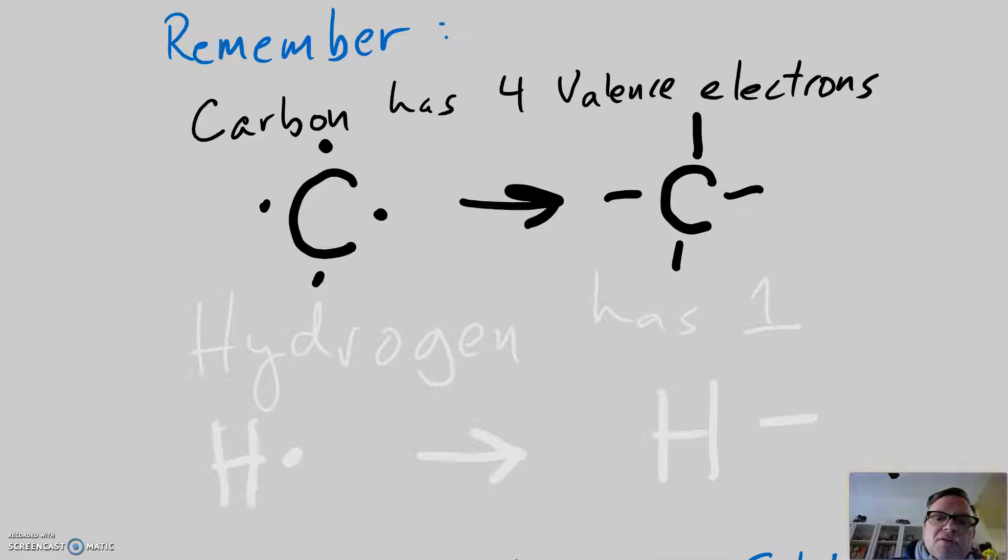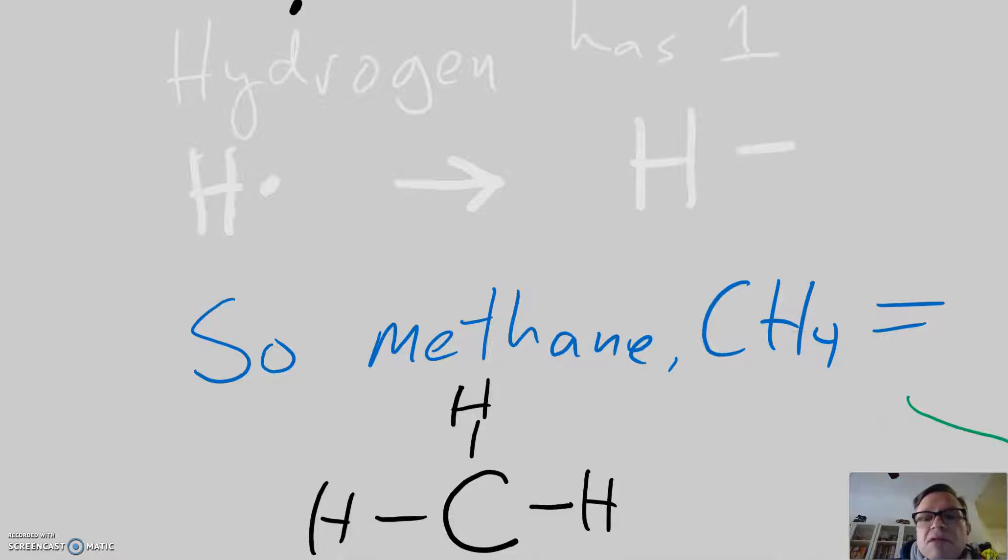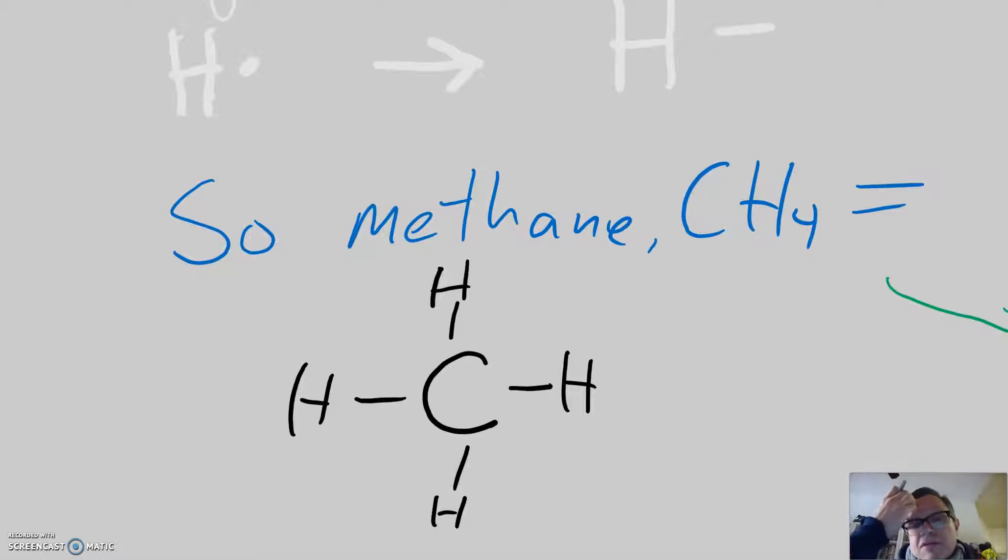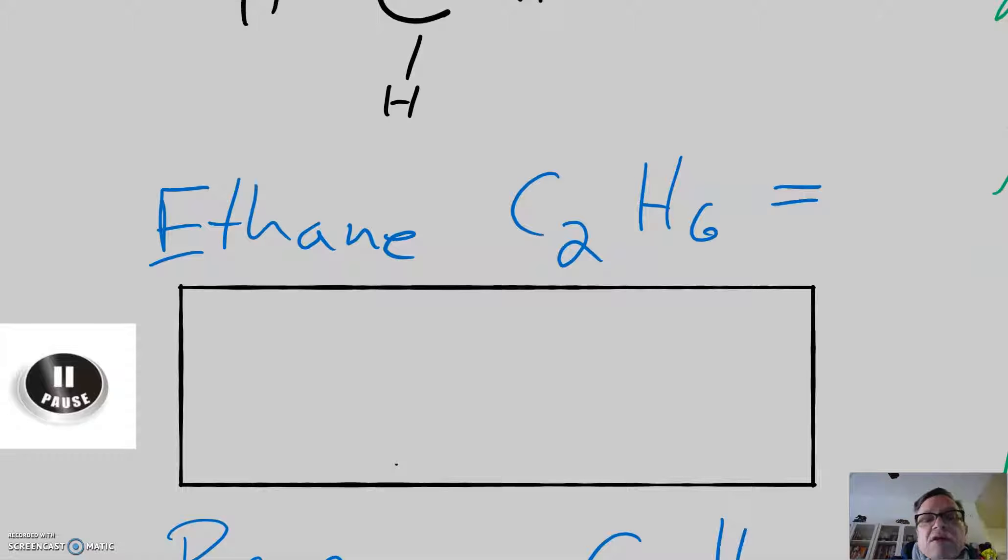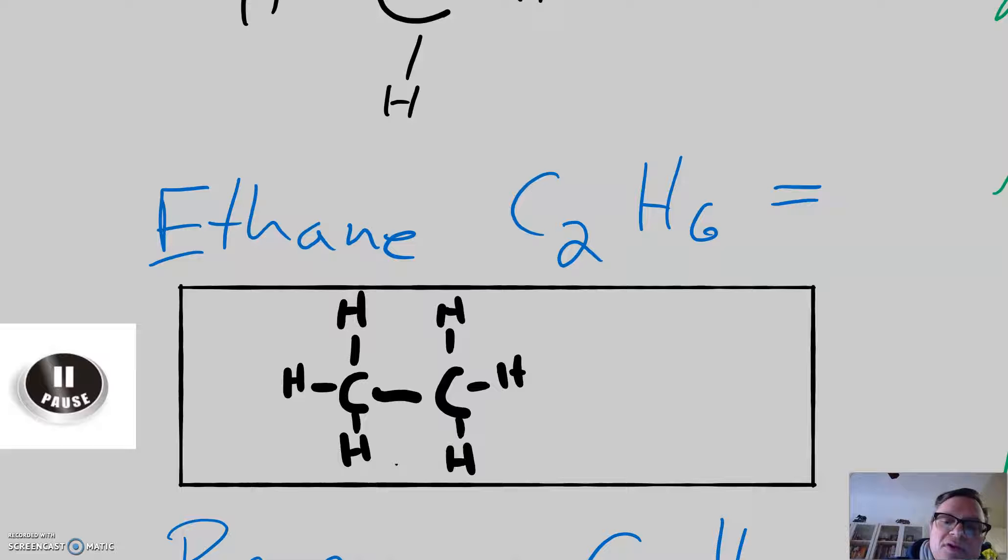If we have a molecule like methane, CH4, it's going to look like this: carbon connected to four hydrogens. What I'd like you to do now is to draw the Lewis structure for ethane. Pause and draw it. Okay, so to draw it, you would need to have two carbons connected to three hydrogens each. And that's where you get the formula C2H6.